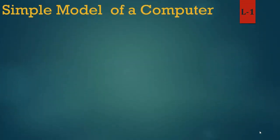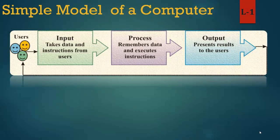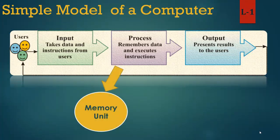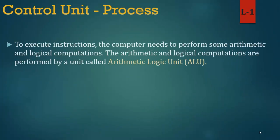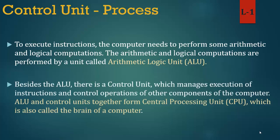Now we learn control unit in detail. Control unit — process. To execute instructions, the computer needs to perform some arithmetic and logical computations. The arithmetic and logical computations are performed by a unit called the arithmetic logic unit, ALU. Besides the ALU, there is a control unit which manages execution of instructions and controls operations of other components of the computer. ALU and control unit together form the central processing unit, CPU, which is also called the brain of a computer.